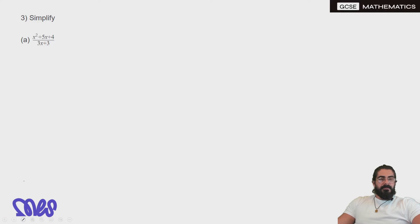Question 3, simplify. We're gonna have to do some factorizing first. x squared plus 5x plus 4. We have x and x. Now, to make 5 with 4, we need 4 and 1, both positive.